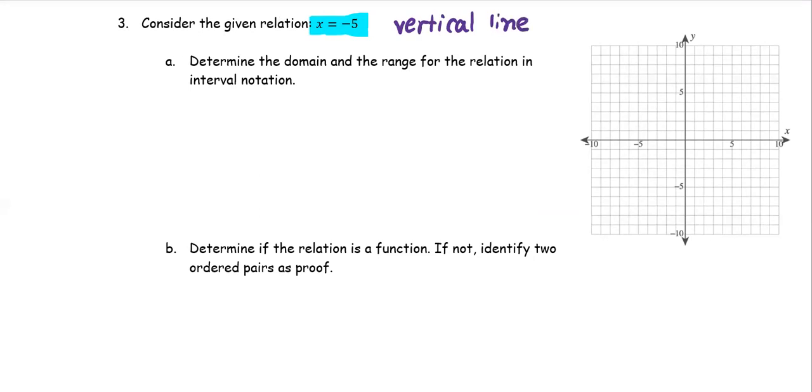We can put on the xy-plane, x is supposed to be negative 5, it doesn't matter what y is going to be. So we have the vertical line to represent the graph of x equals negative 5.